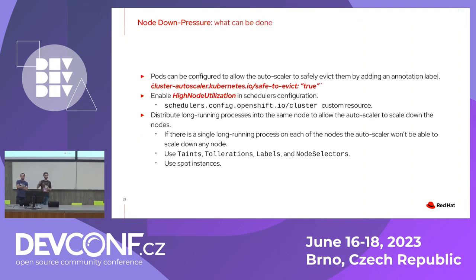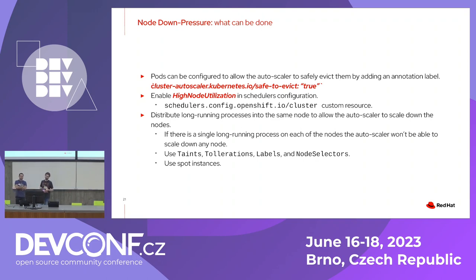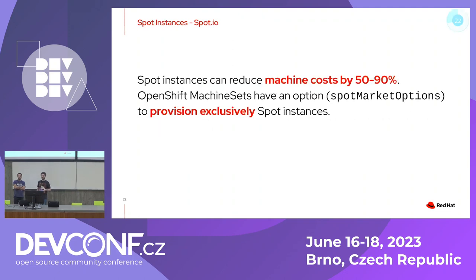You can bypass these limitations by applying specific labels to your pods. You can also enable high node utilization in your scheduler's configuration, which is a CR in OpenShift. Another important trap: long-running processes on a node will keep that node alive in the autoscaler. Once you identify them, you can use taints, tolerations, or node selectors to consolidate long-running processes onto one node, allowing autoscaler to do its job on others.